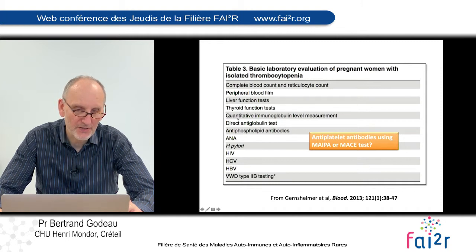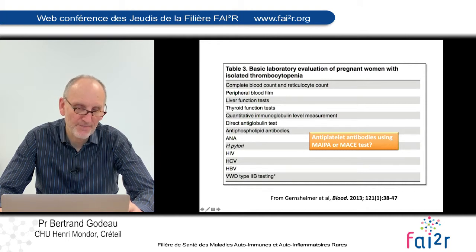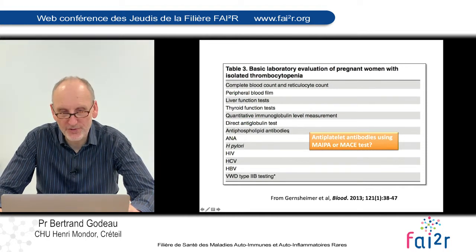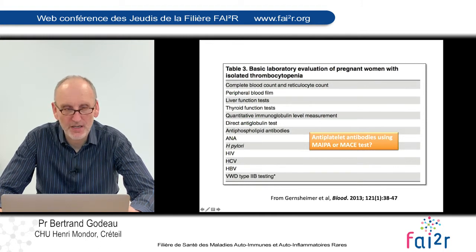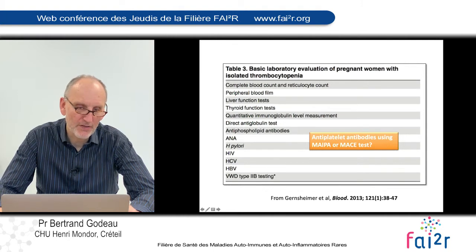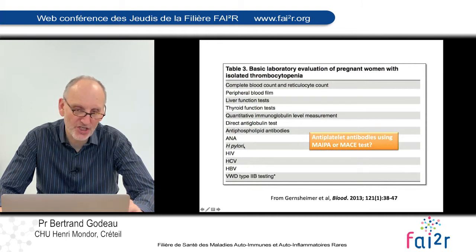It's absolutely necessary to perform a test to check the presence of lupus and antiphospholipid antibodies, because in case of lupus or antiphospholipid antibodies, it's necessary to propose specific treatments such as, for example, anticoagulant therapy after delivery. For other tests, H. pylori — there is no consensus and it's not my practice to systematically check for the presence of H. pylori in pregnant women.